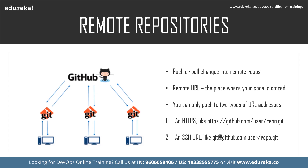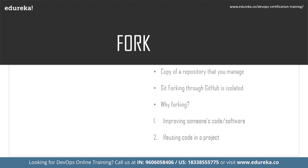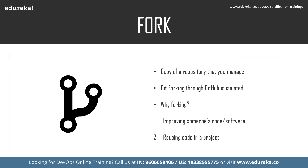Now let's understand the fork command. A fork is a copy of a repository. Forking a repository allows you to freely experiment with changes without affecting the original project. Forking in GitHub is a process of creating a copy of a complete repository to the user's GitHub account from another account. When a user forks a repository, all the files are automatically copied to the user's account on GitHub, feeling like the user's own repository — similar to copying a folder from one drive to another.